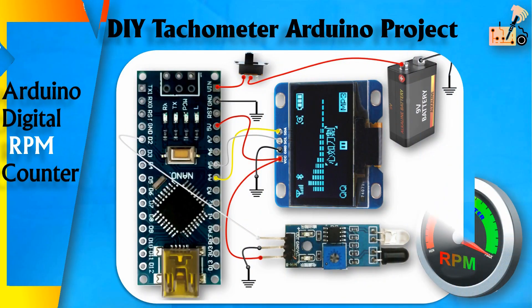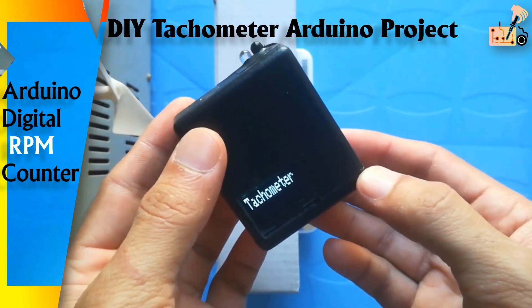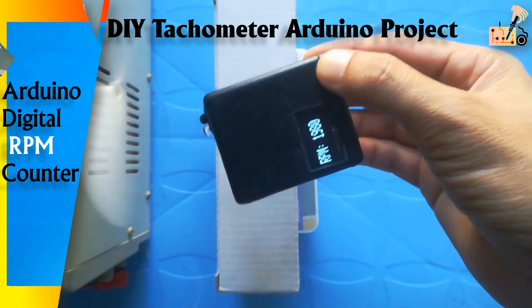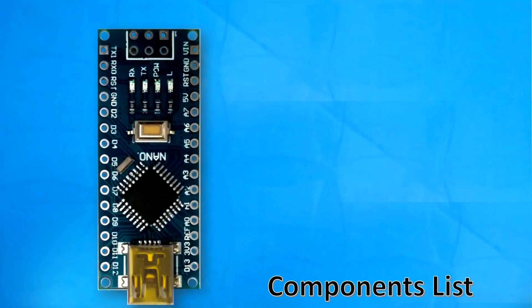Arduino Tachometer: Low-Cost RPM Measurement for Rotating Objects. Create a low-cost portable tachometer using Arduino for measuring RPM of motors or any rotating object.